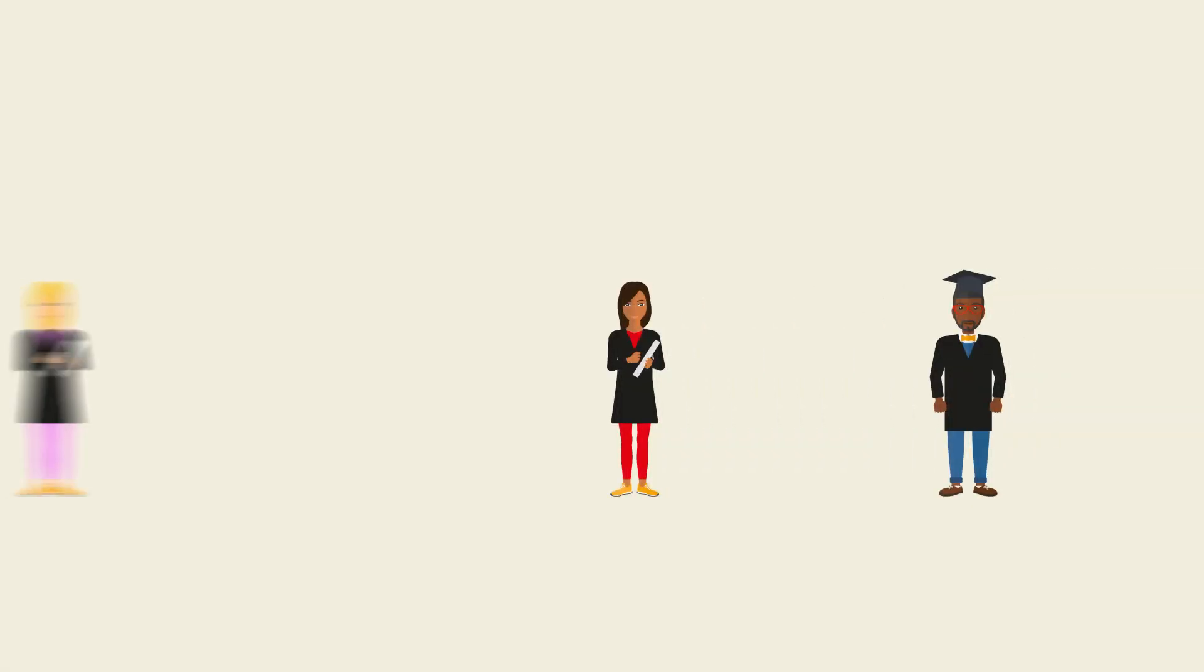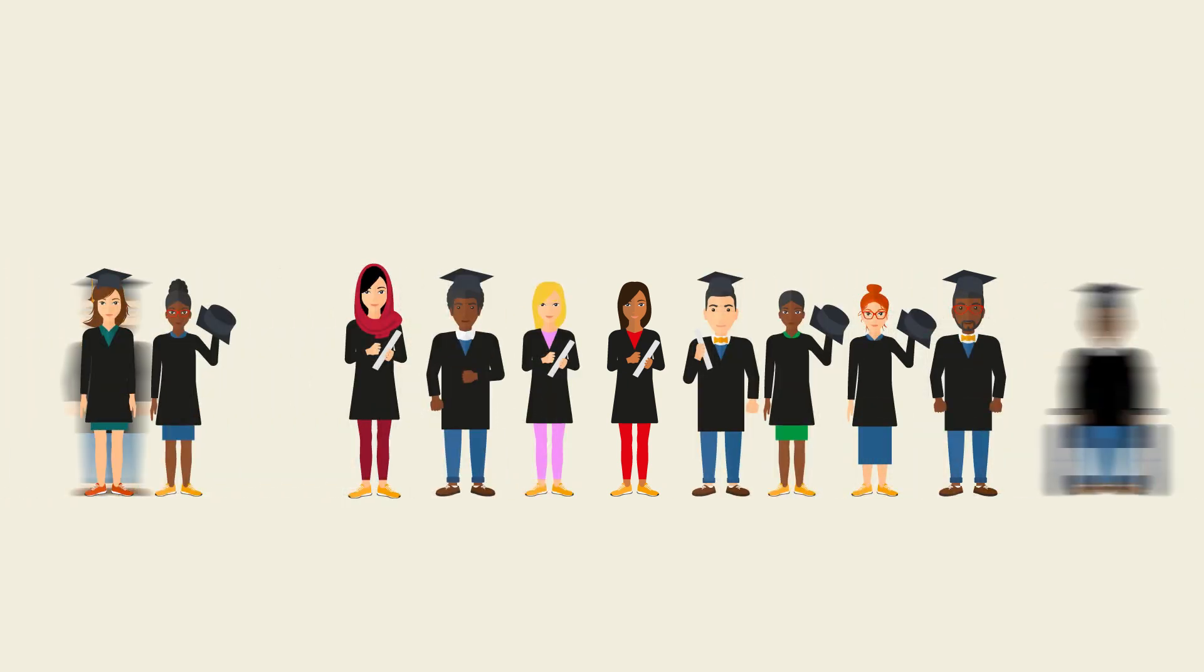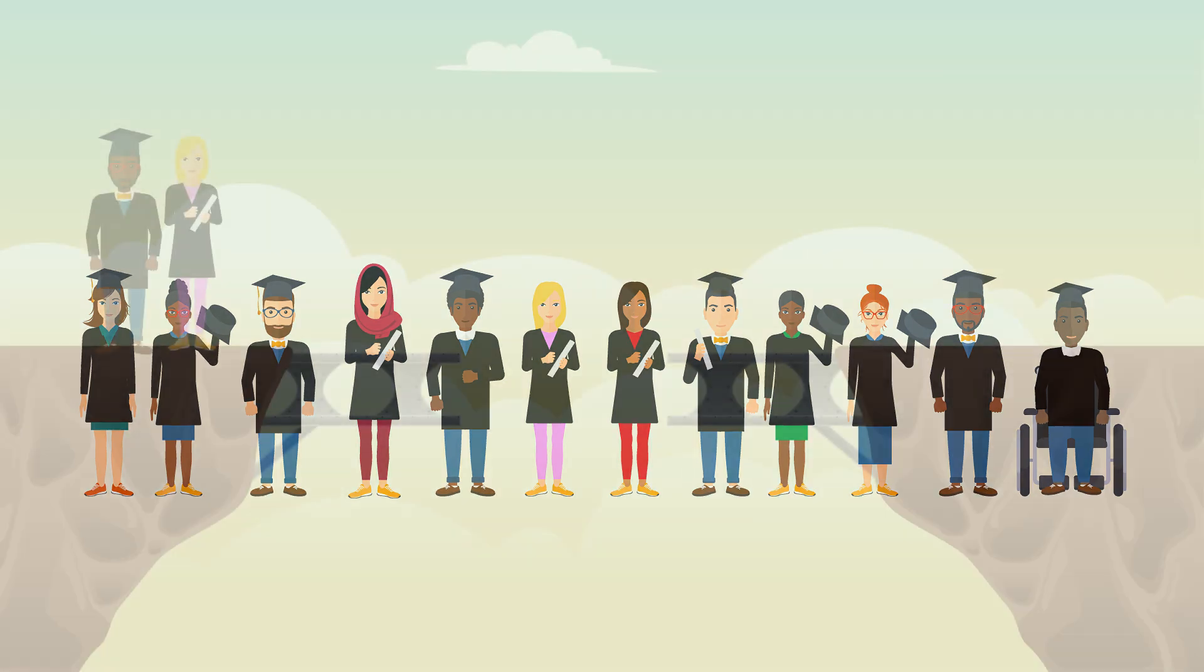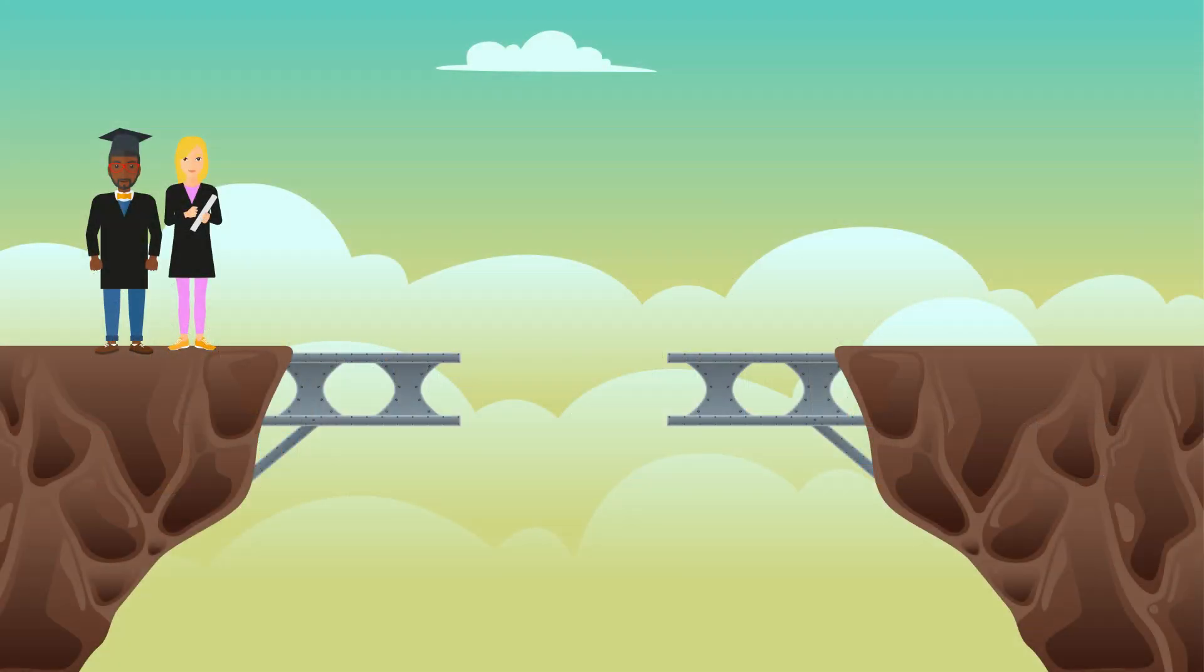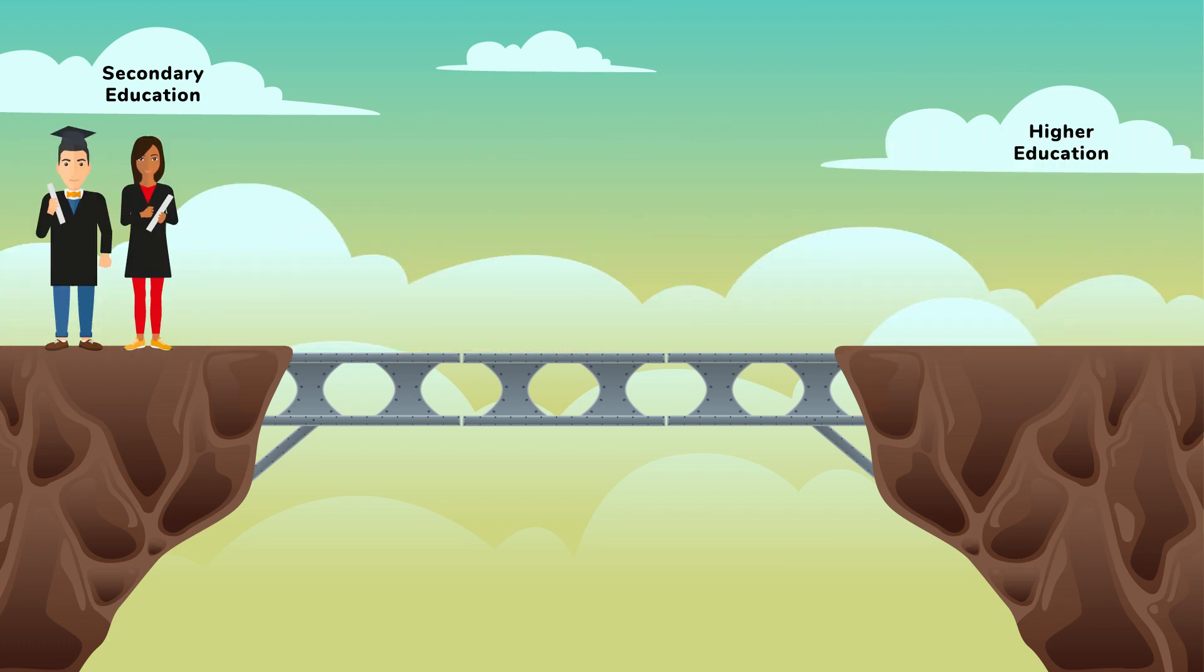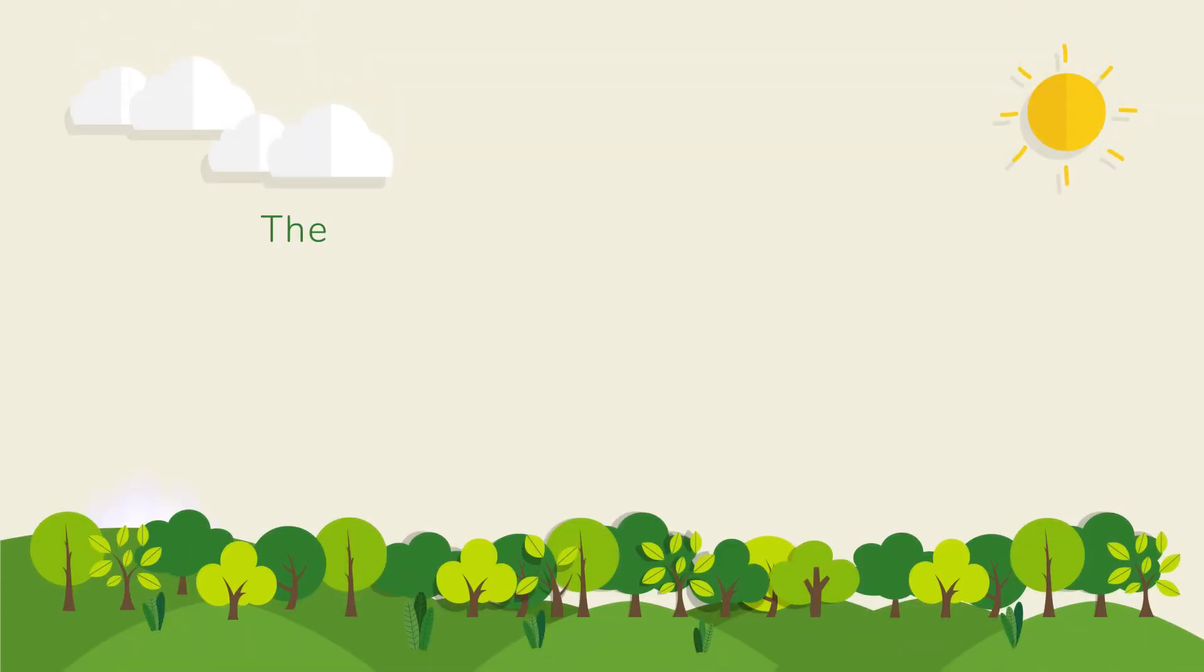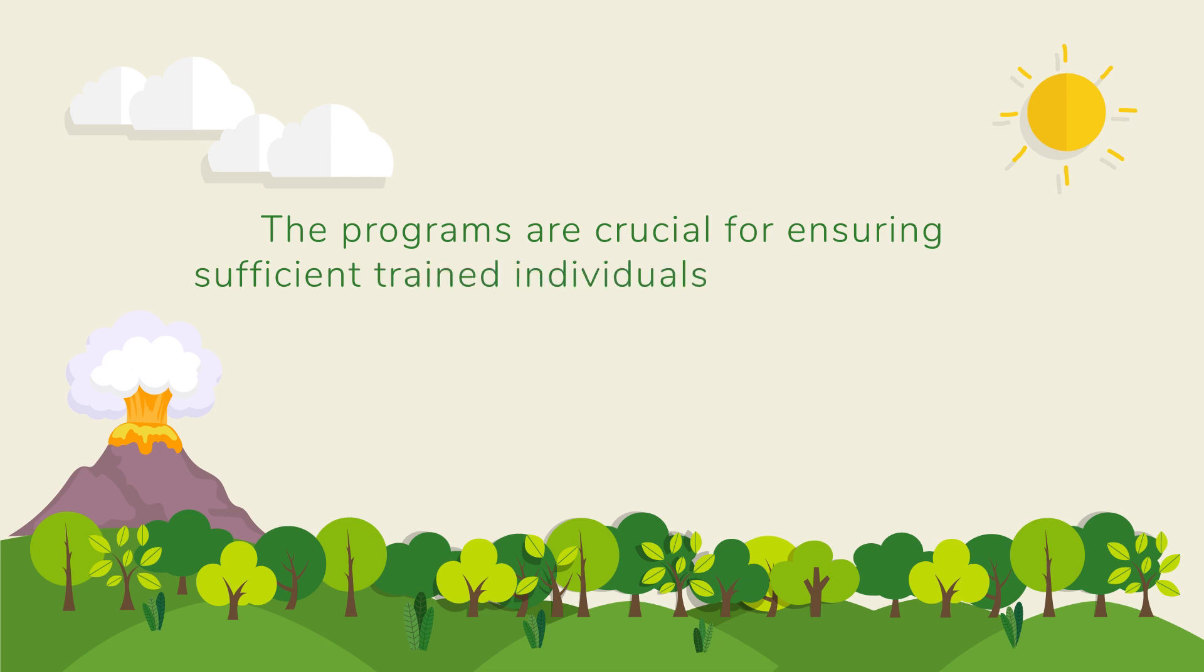Together, the three programs are enhancing the number of underrepresented students pursuing education in key science subjects, with Ag Discovery bridging the gap between secondary and higher education, and the SOAR and SOAR SWAG programs bridging the gap between undergraduate and graduate study. Ultimately, the programs are crucial for ensuring sufficiently trained individuals are entering the scientific workforce.